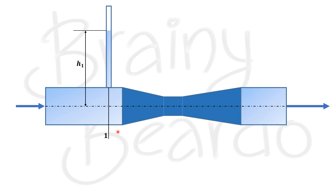When the fluid passes through the convergent part, the pressure is going to reduce. The pressure will be minimum when it reaches the throat section. Let us call the throat section as section 2, and we will fix a piezometer at section 2 as well.